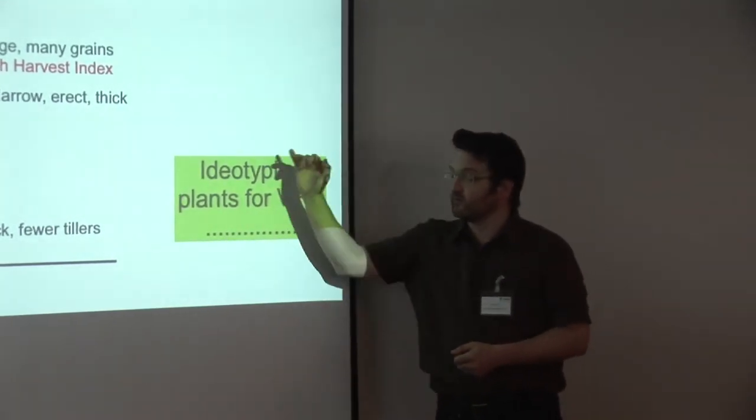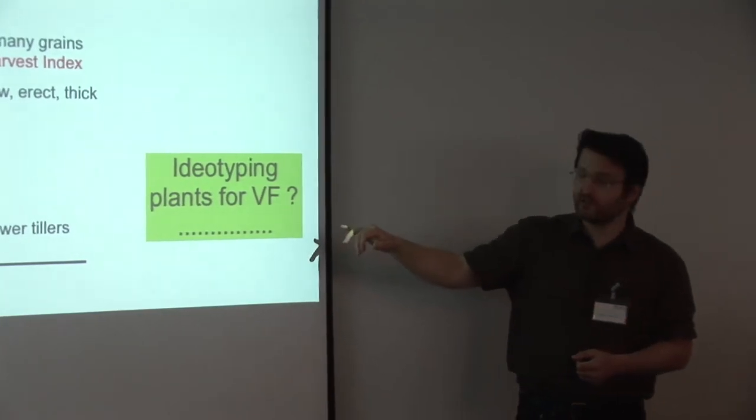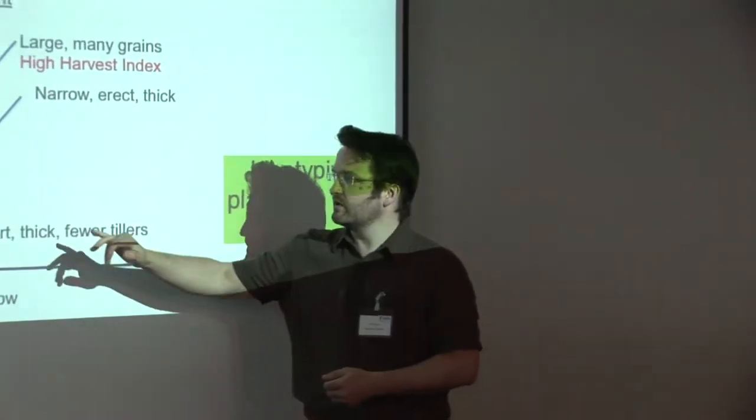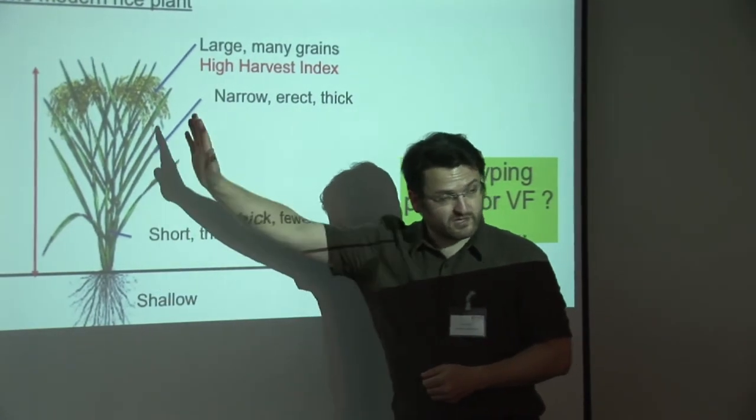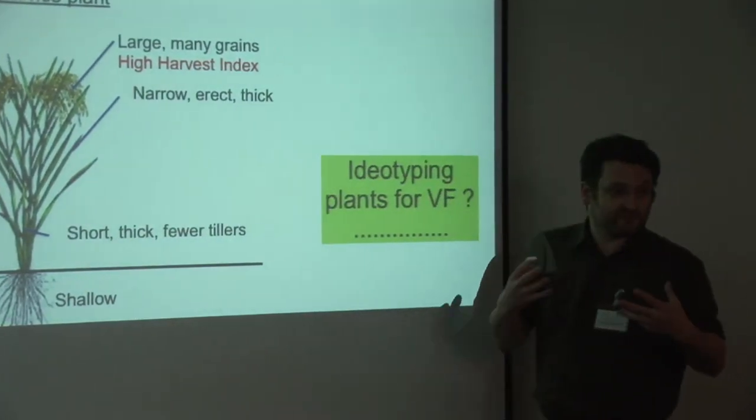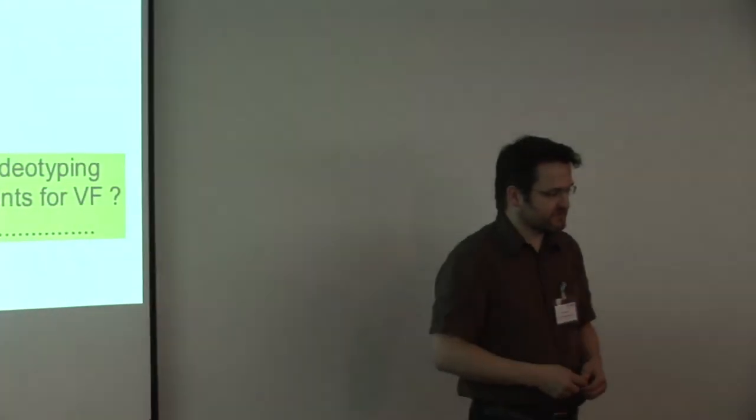Do we need to do some idiotyping of plants for vertical farming? The genes that control leaf erectness, for example, rice is better with upright leaves, the genetic control is very simple. So perhaps there's an opportunity to idiotype plants for vertical farming systems. That will depend on the plant.